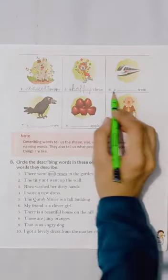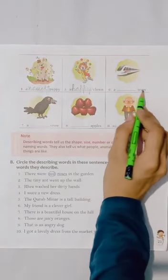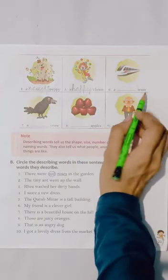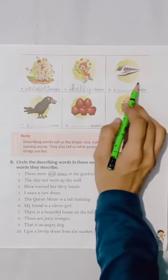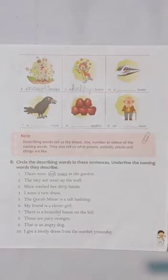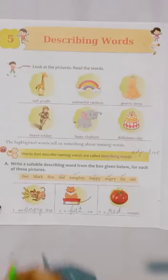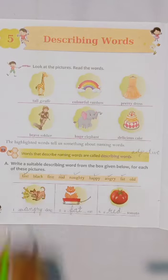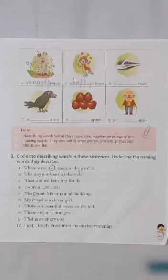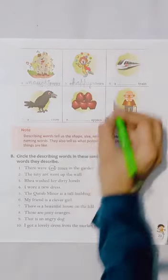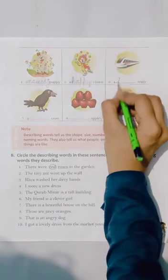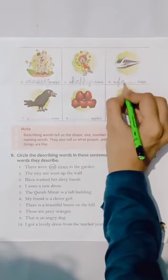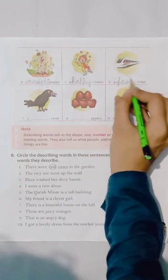Then the next part. A dash train. See how the train is, then come to the help box. Fast train? Yes! The train is fast. So let's write F-A-S-T, fast.